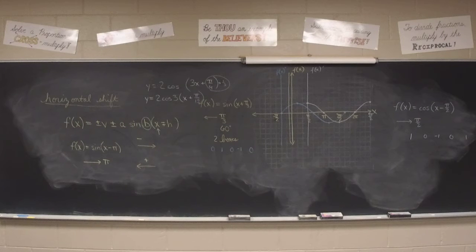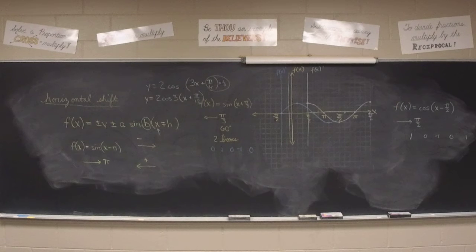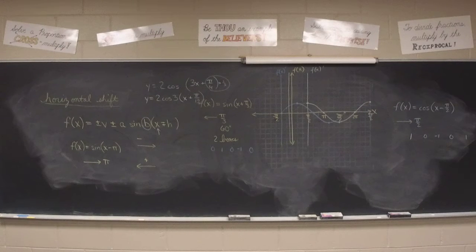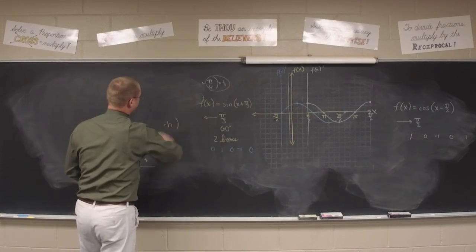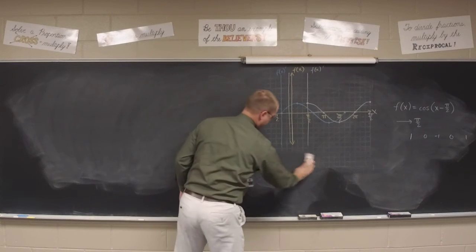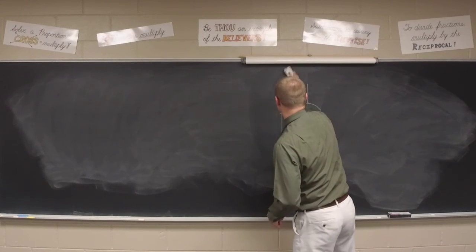Number 5: no horizontal shift. Number 6: pull out a one-third — dividing one-third out of one-third x gives x; dividing one-third out of π/3, multiply by reciprocal 3, gives π. So horizontal shift is backward π. That's why this is more challenging — you may have to factor first. At your seats, figure the horizontal shift on problems 7 through 12.